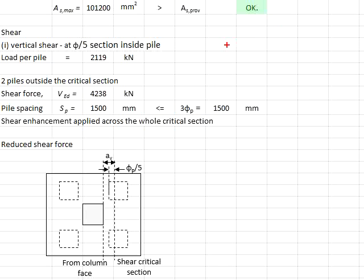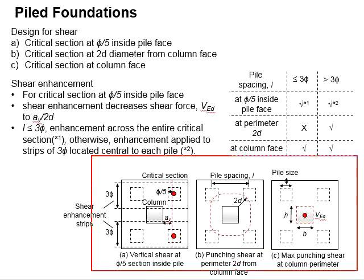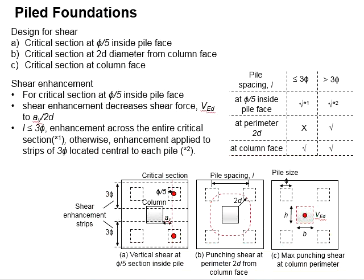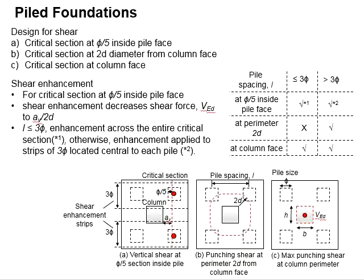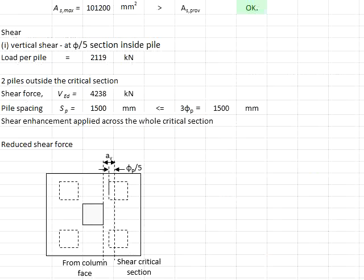Next we need to check for the shear resistance of the pile caps. There are three critical sections to be checked: the critical section at the offset distance of d from the column face, punching shear at 2d from the column face, and also punching shear at the perimeter at the column face.